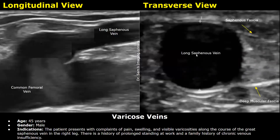In this example, the patient is a 45-year-old male presenting with complaints of pain, swelling, and visible varicosities along the course of the great saphenous vein in the right leg. There is a history of prolonged standing at work and a family history of chronic venous insufficiency.